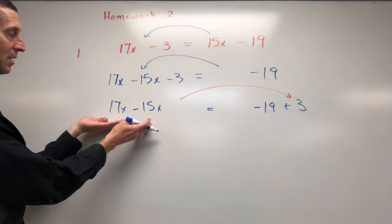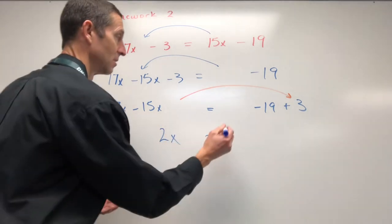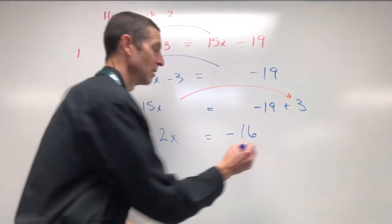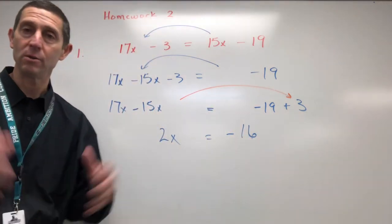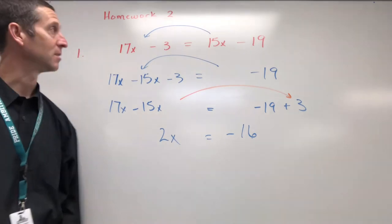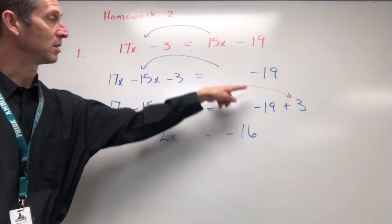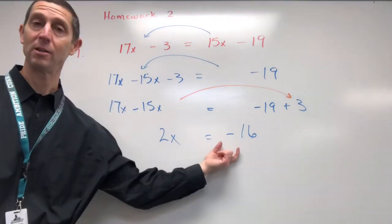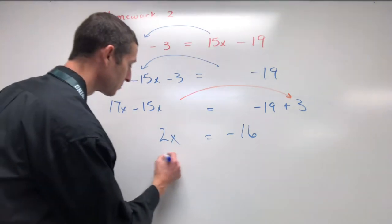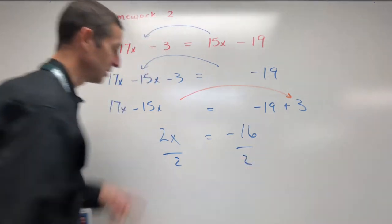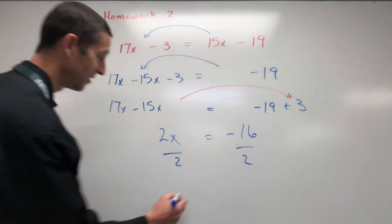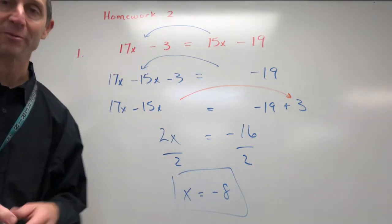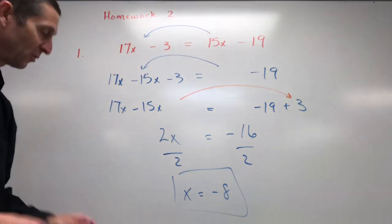So here we go. We got 17x minus 15x, that's just 2x. Here I've got negative 19 plus 3, negative 16. So whichever way you like to do it is fine—adding the opposites if you wanted to add 3 to both sides. That all is going to lead you down the same road. Should get you 2x, should get you negative 16. We'll divide by 2 since they're multiplied. We divide: x equals negative 8. So we're back in business. We're solving these equations. So there's the first example.